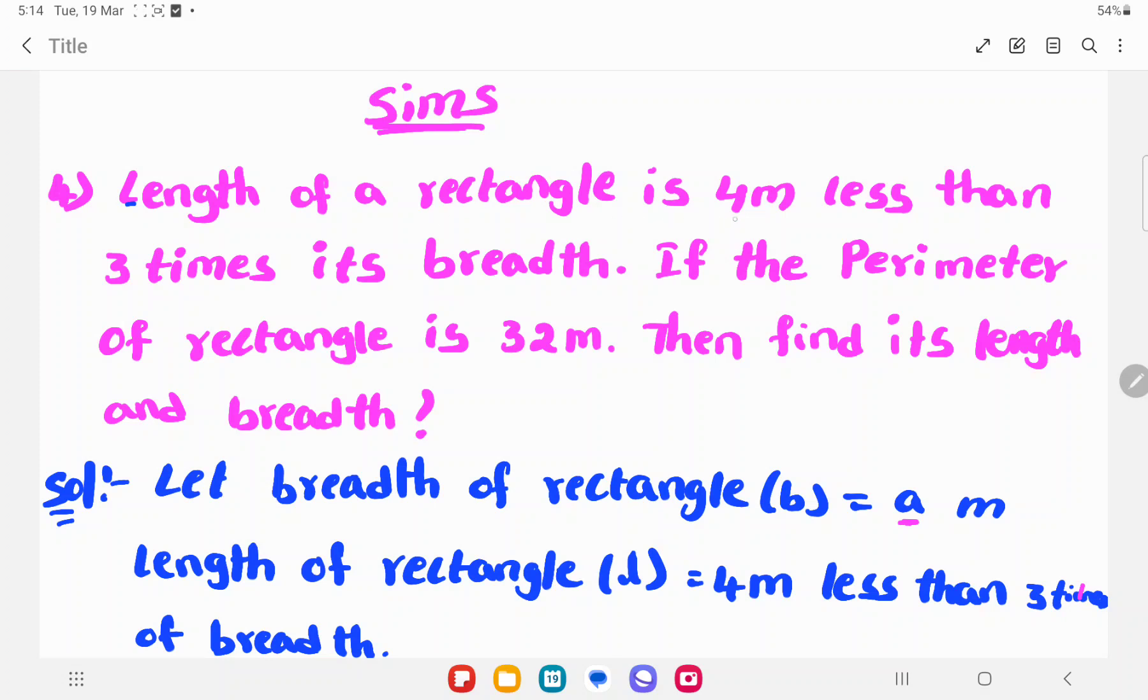Length of a rectangle is 4 meters less than 3 times its breadth. If the perimeter of the rectangle is 32 meters, then find its length and breadth.